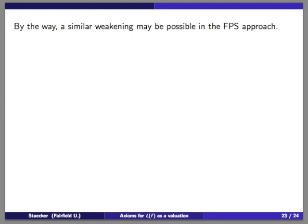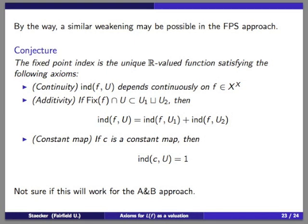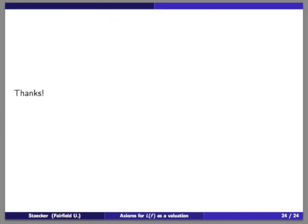As a conjecture: I think you could weaken homotopy to a continuity axiom in the Furi-Pera-Spadini approach as well, because their arguments use transversality — you take any map, change it by homotopy via transversality to make all fixed points isolated, and locally the map is homotopic to a constant near the fixed points. Since it is all transversality, I believe only small homotopies are needed, so their invariant may only really require continuity. I am less sure this would work for the Arkowitz-Brown approach, which uses bigger homotopies rather than transversality.